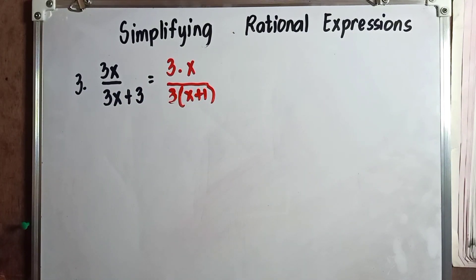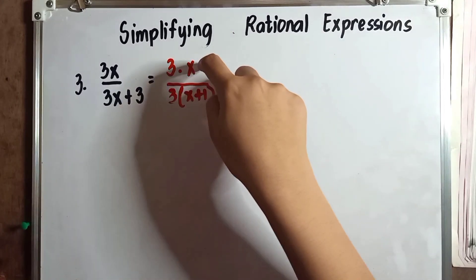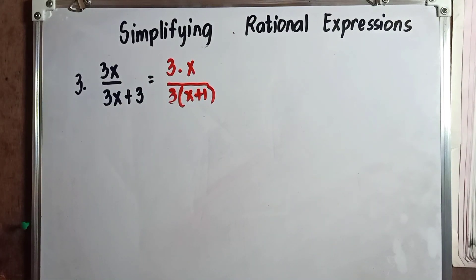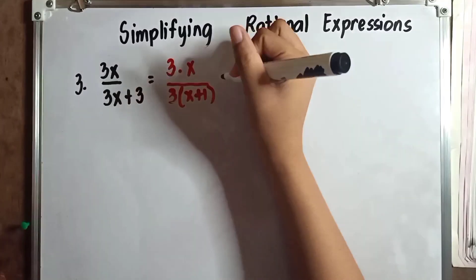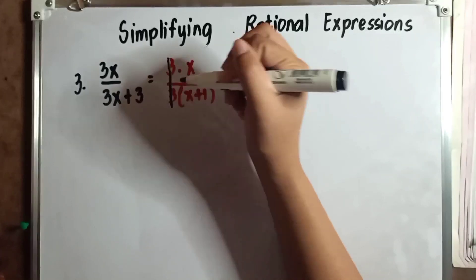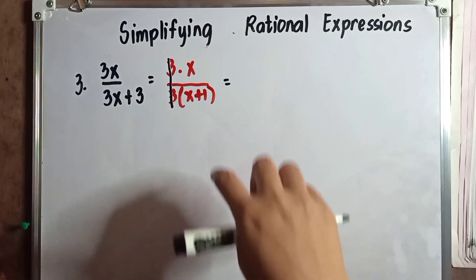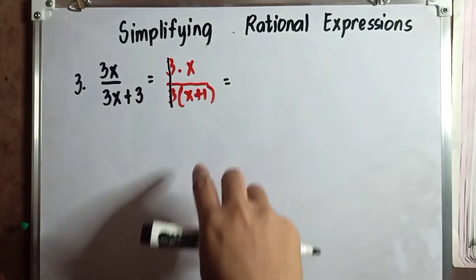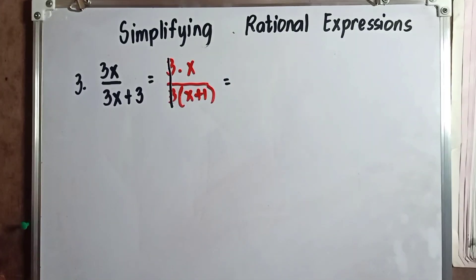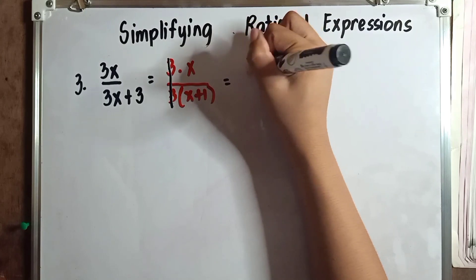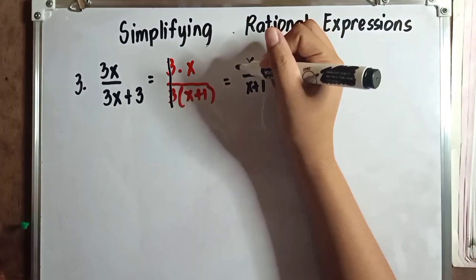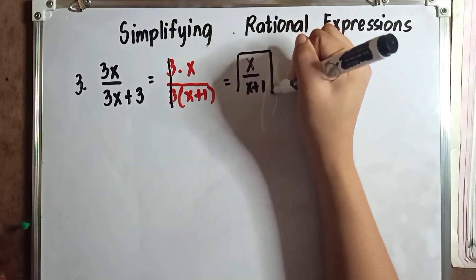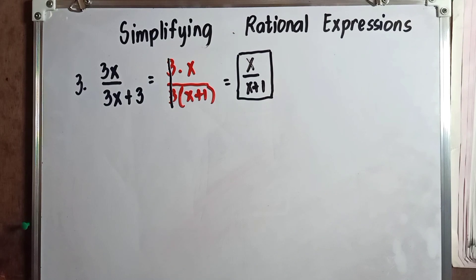After factoring, we cancel out the common factor — which is 3 and 3, not just the common terms. Take note: it is the common factor, not just common terms. So 3 and 3 cancel out. Since x plus 1 is a binomial and x is a monomial, we cannot cancel x and x plus 1. So our final answer is x over x plus 1.